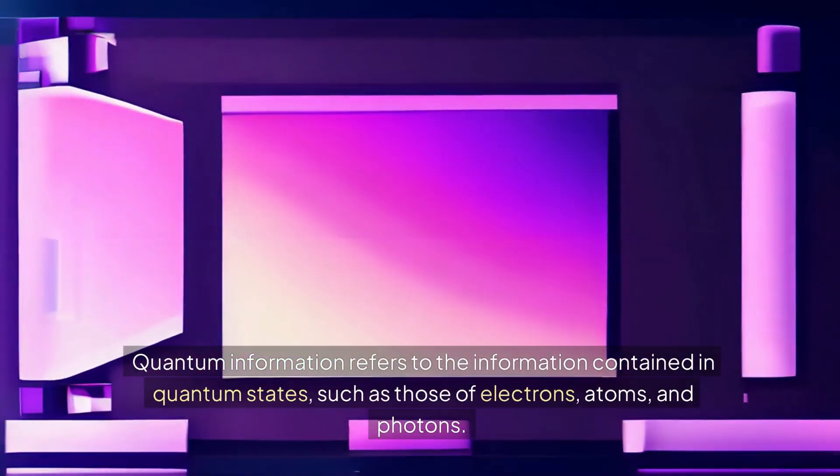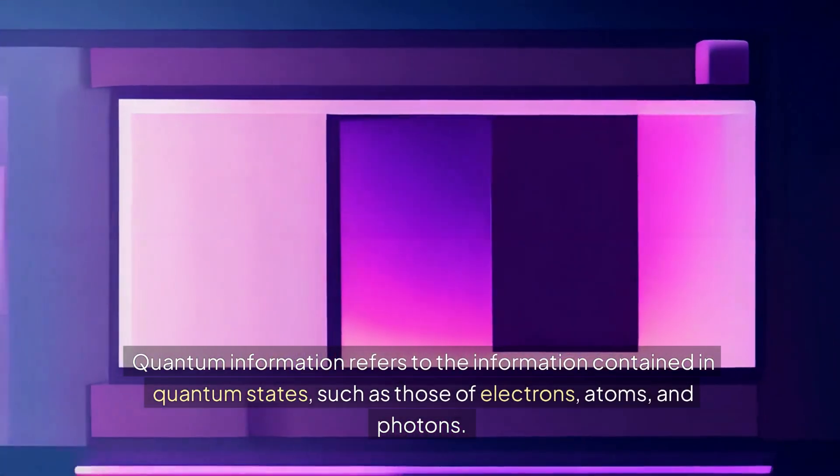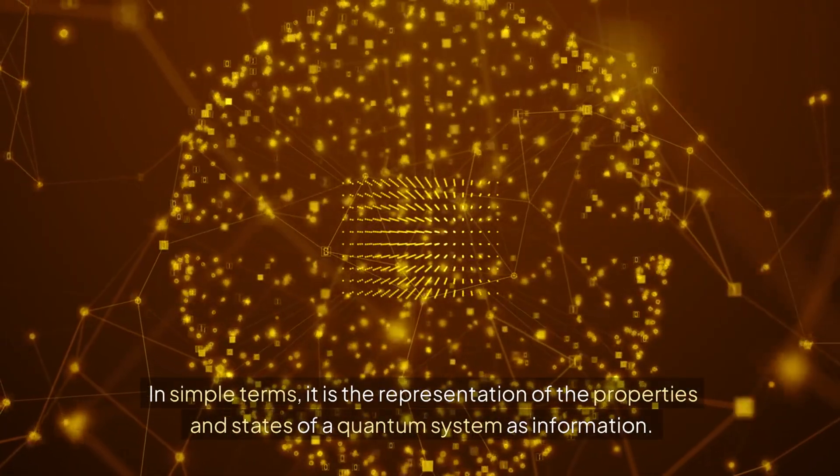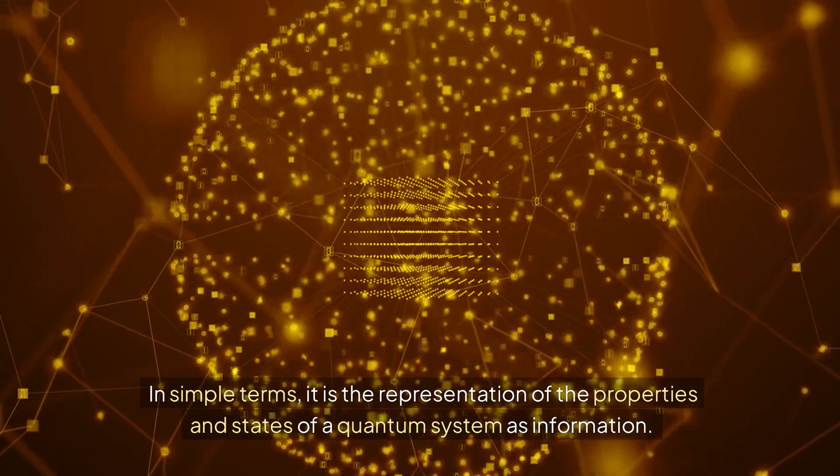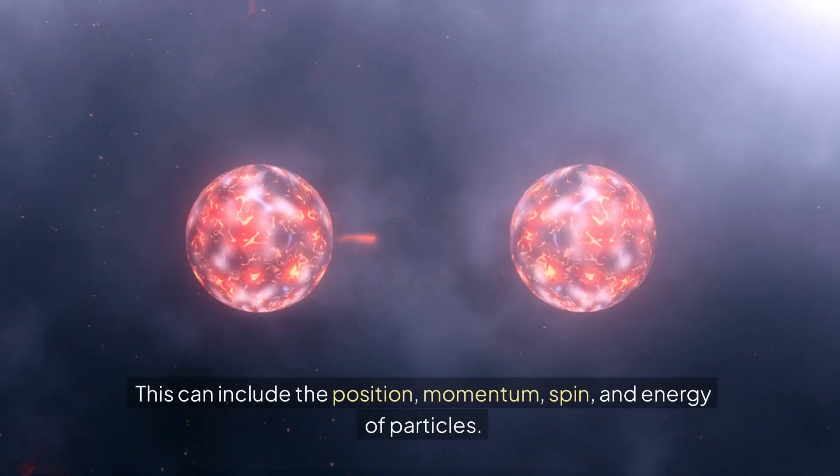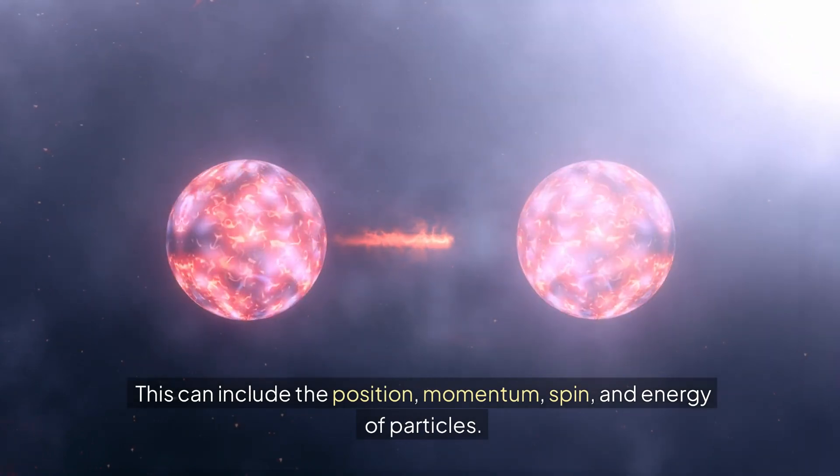Quantum information refers to the information contained in quantum states, such as those of electrons, atoms, and photons. In simple terms, it is the representation of the properties and states of a quantum system as information. This can include the position, momentum, spin, and energy of particles.